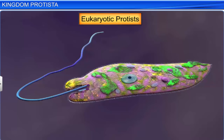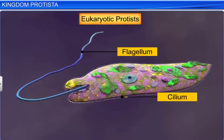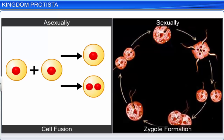Some protists also have either a flagellum or a cilium. They reproduce both asexually through cell fusion, and sexually via zygote formation.